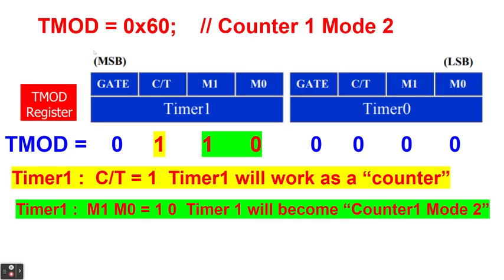Let me explain to you TMOD. The timer mode equals 0x60 will mean that we will be using the timer as counter, and specifically, it will be counter 1 in mode 2. Talking about the timer mode register, the timer mode register TMOD is divided into two parts, the timer 1 and the timer 0. For timer 1, we have the timer 1's gate, C/T, M1, M0. Timer 0 also has a gate, C/T, M1, M0, which was discussed in previous videos. But let me focus on the value of CT.